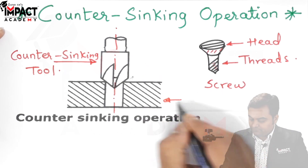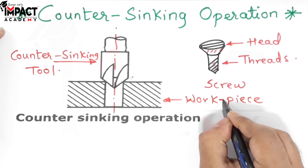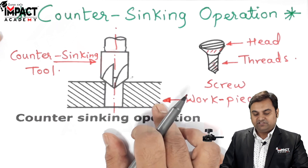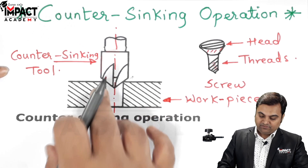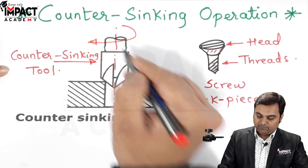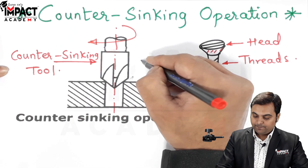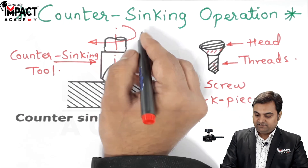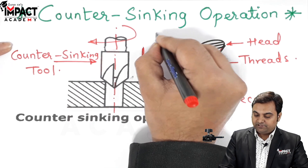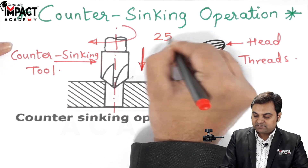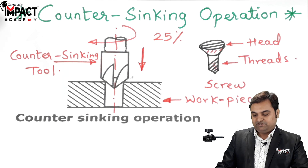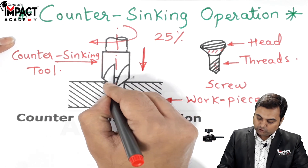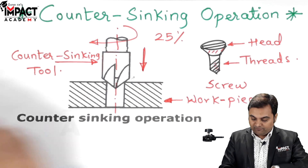Here there is the workpiece. The operation is performed by fixing the workpiece onto the machine table, and then the countersinking tool, which is a multipoint cutting tool, is rotated and fed towards the workpiece. The speed at which it is rotating is approximately 25% less than the speed during the drilling operation — that is, countersinking is performed at a lower speed compared to the drilling operation.